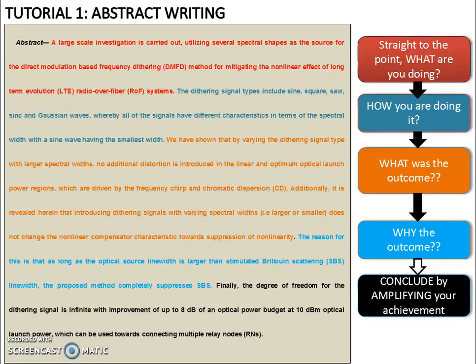So in an abstract, both for thesis and a paper, you can break it down to five segments. These are the five segments. So we're looking at straight to the point. When you start an abstract, you must get straight to the point. What are you doing? And then how you're doing it. What was the outcome? This is how you did it. What happened? Why that happened particularly? Why the outcome? And you have to conclude. So let's move into this individual segments in more detail now.